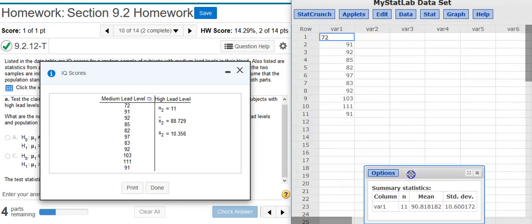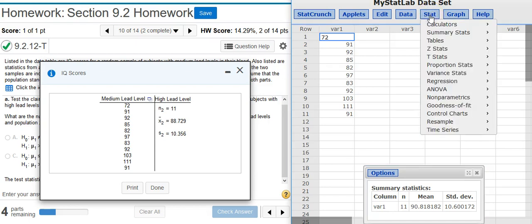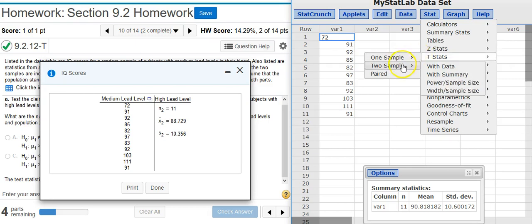So I'm going to move this results window down to the bottom. Now we have everything we need to calculate the test statistic by performing our hypothesis test. So to do that, I'm going to go to Stat. I go to T-Stats because we don't know what the population standard deviation is. Two samples because we have two independent samples. And we have With Summary because we don't have actual data for both samples, but we do have summary statistics for both of the samples.